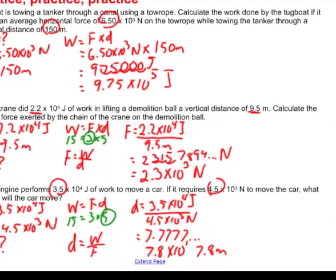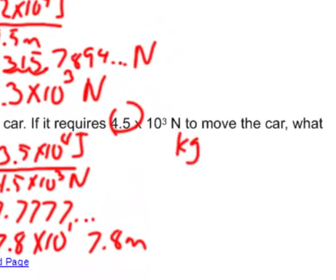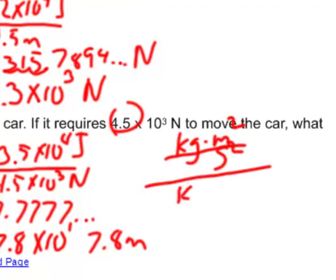Well, if you'll remember, a joule is a kilogram times a meter squared per second squared, and you're going to divide that by a newton, which is a kilogram times a meter per second squared. And so what's going to happen here is everyone's going to cancel out.